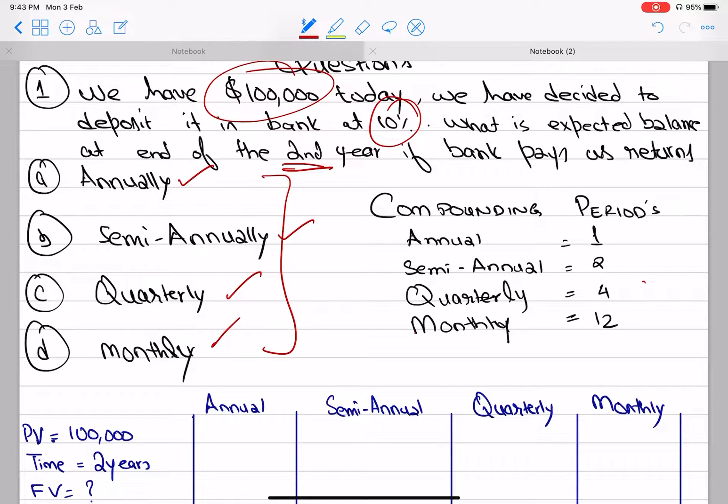These all can be referred to as compounding periods. We have already studied compounding. Annual is 1 period per year, semi-annual is 2, quarterly is 4, and monthly is 12.